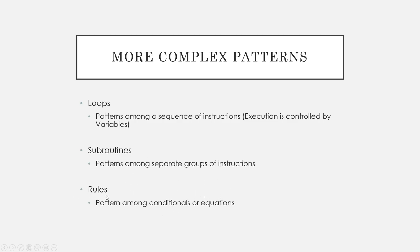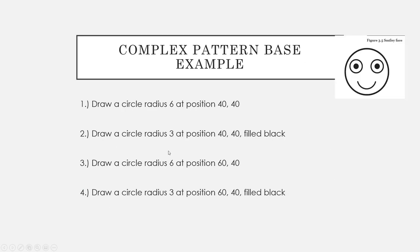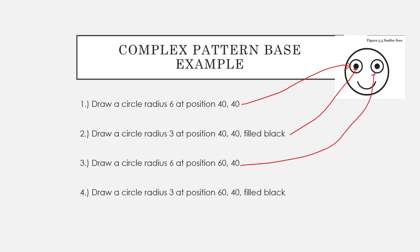Let's look at an example: drawing two eyes on a smiley face. A simple algorithm might have four steps: draw a circle with radius 6 at position (40,40); draw a circle with radius 3 at position (40,40) and fill it black — that's the first eye. Then draw a circle with radius 6 at position (60,40) and draw a circle with radius 3 at position (60,40) filled black for the second eye. Each algorithm step corresponds to one of those shapes.